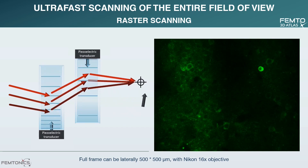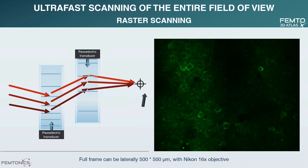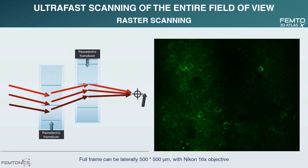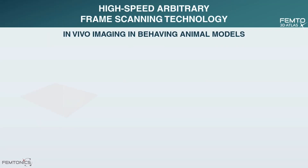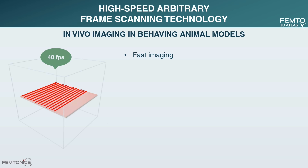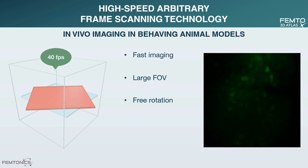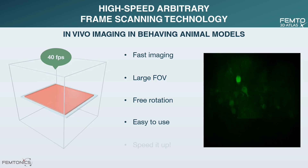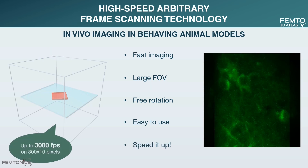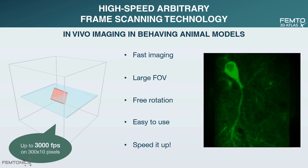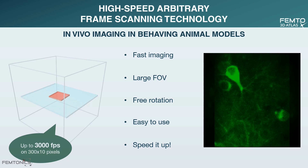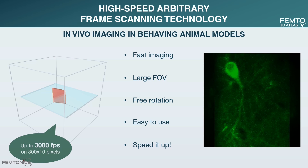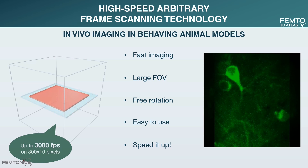Here you can see the demonstration of that principle. Please note that the speed on the display serves illustration purposes — scanning of a line occurs indefinitely faster, resulting in the video which is an actual AO raster scan. This mode is called the high-speed arbitrary frame scanning mode and it provides a scanning speed of 40 frames per second at a large 500 by 500 micron field of view. Thanks to the acousto-optical technology, the fast scan plane can be either perpendicular to the axis of the objective or can have an arbitrary angle in X and Y, so you can tilt your focal plane in any direction in the tissue. Navigating through your sample in 3D is made easy by our new user interface elements.